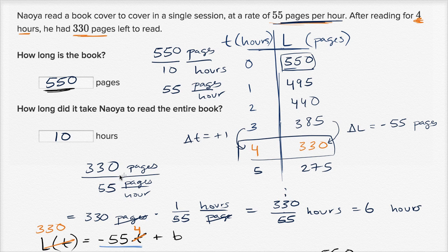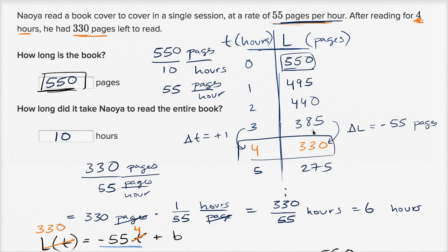We could have simply taken 550 pages divided by 55 pages per hour to get 10 hours, rather than computing 330 divided by 55 to get 6 more hours from the four-hour mark. There are a ton of different ways to solve these problems, and they're all really representing the same thing. That's what's neat about mathematics — they're different ways of representing how to think about things, but at the end of the day, it's the same problem.